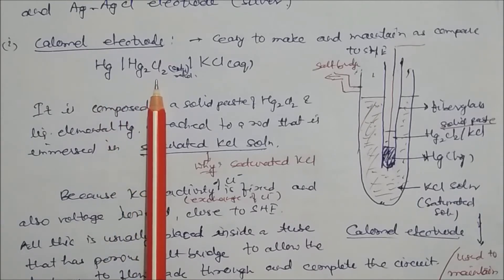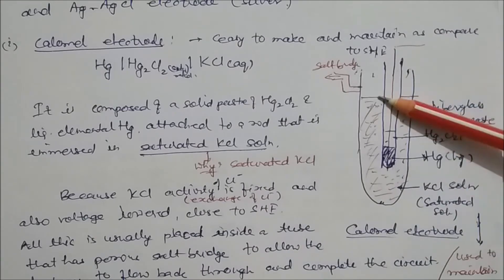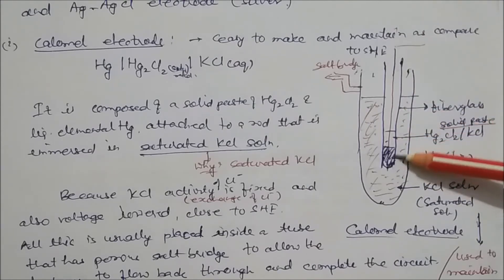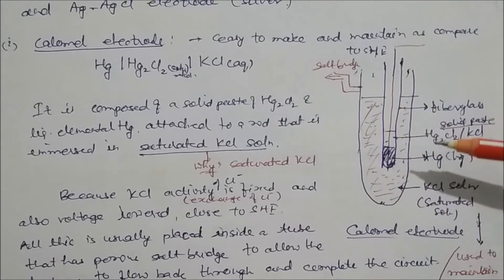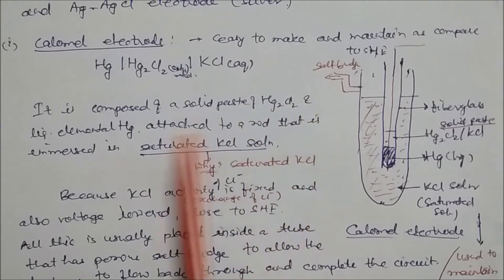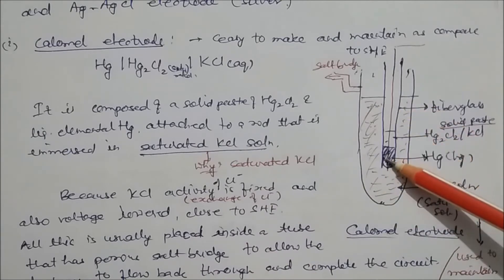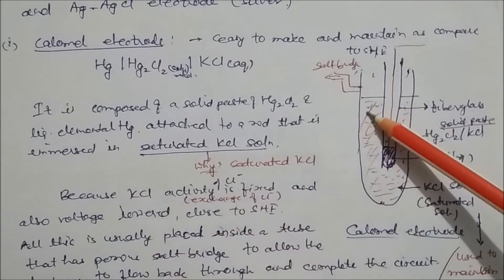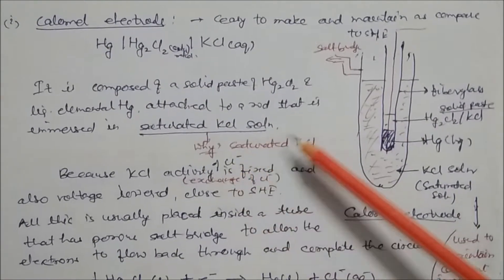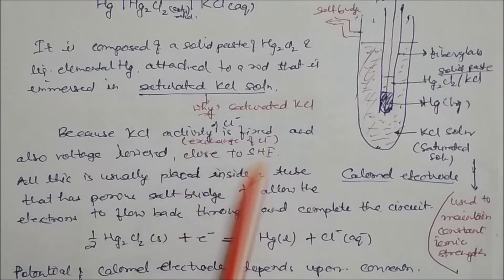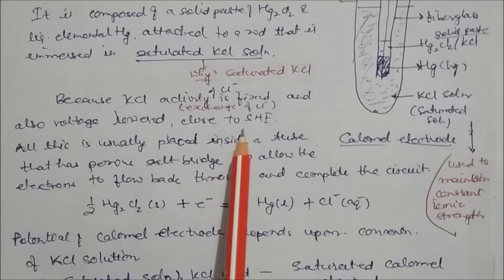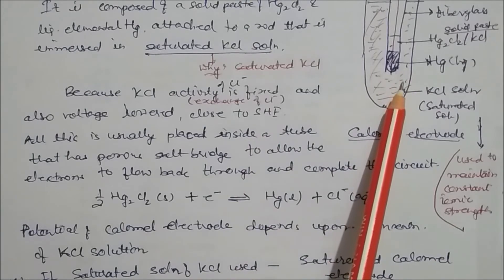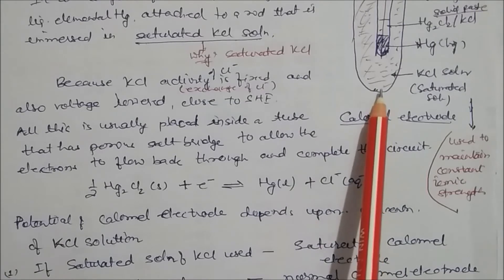The Calomel electrode is saturated with KCl aqueous solution. Looking at the diagram: it is composed of Hg₂Cl₂ paste and liquid elemental mercury attached to a rod, immersed in saturated KCl solution. A porous plug is also present. KCl solution is used to maintain constant ionic strength through the Cl⁻ ion activity. This electrode is advantageous because no gases are produced, and it is much easier to use than the hydrogen electrode.